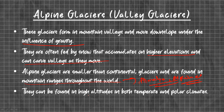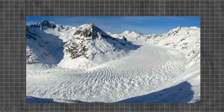They can be found at high altitudes in both temperate and polar regions. As you can see in this picture, this is the mountain and this is the glacier flowing down from it.